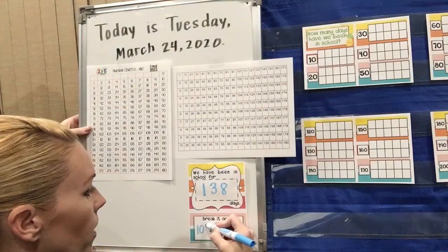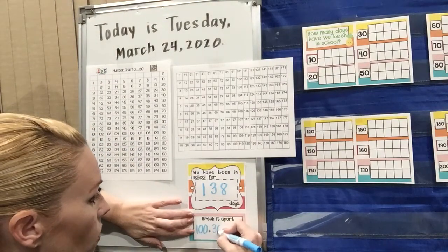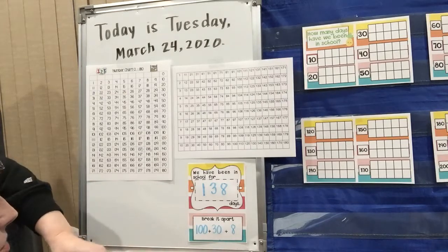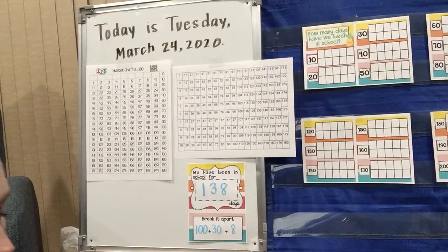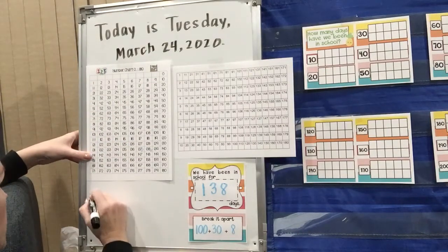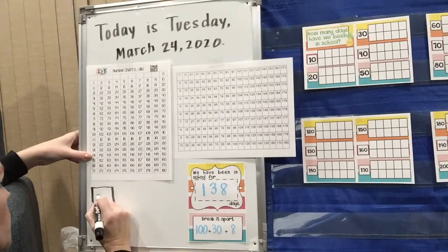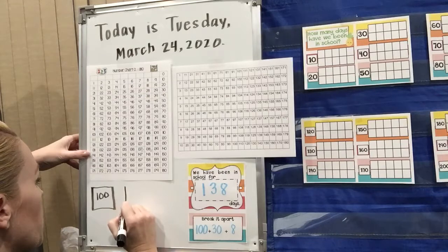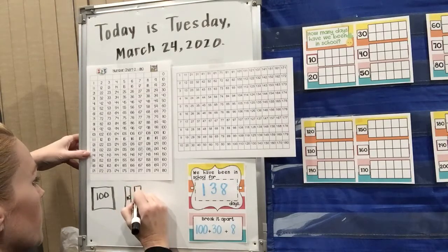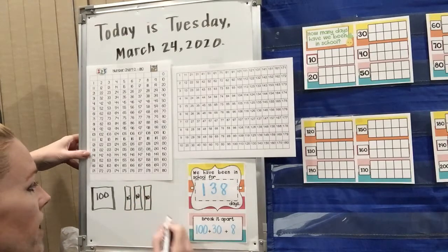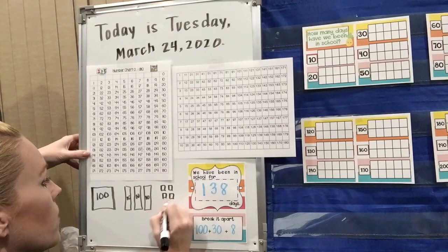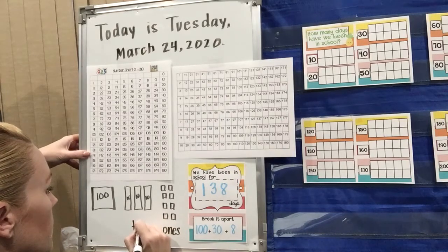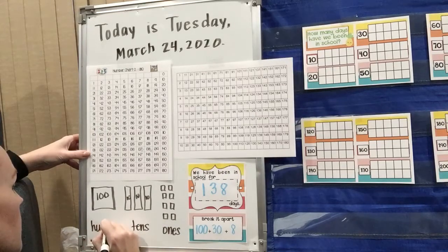So we could say 100 plus 30 more plus 8 more — so 138. I don't have a paper to do rods and tens, but I thought I could do it right here. So I'm going to make our 100 block — it's actually called a 100 flat, I learned that today. And we're going to do three tens: 10, 20, 30, and then eight ones: 1, 2, 3, 4, 5, 6, 7, 8. So we have ones, tens, and hundreds.